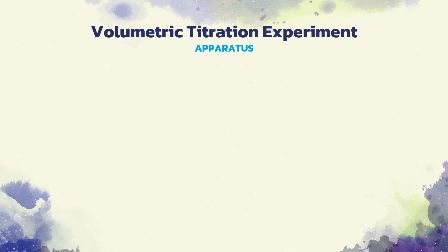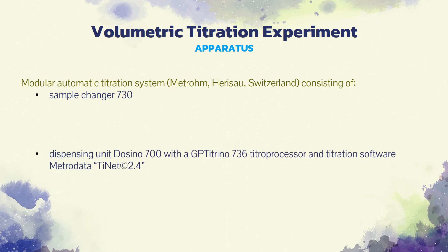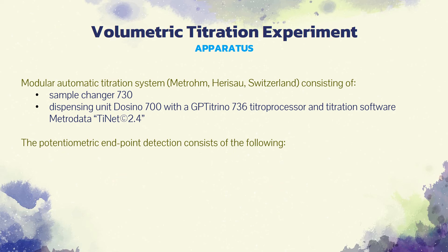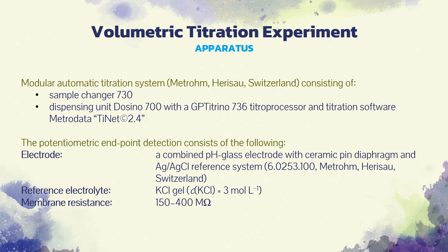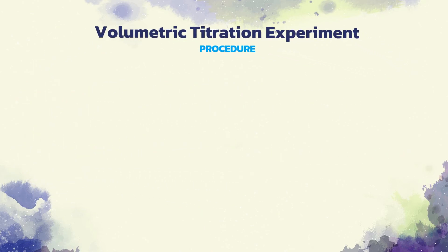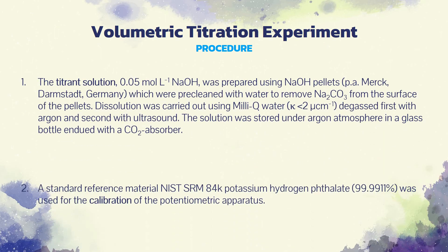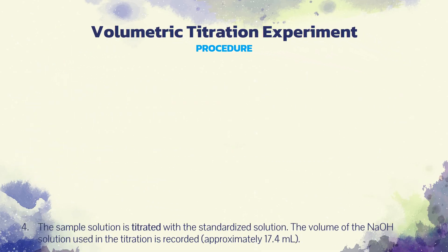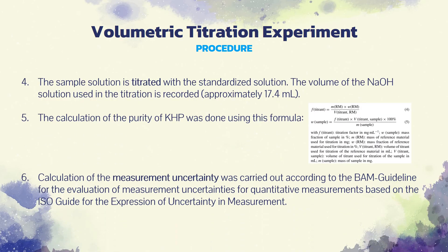For the volumetric titration experiment, titrations were carried out using a modular automatic titration system consisting of a sample changer and a dispensing unit. For potentiometric endpoint detection, a combined pH glass electrode and silver-silver chloride reference system was used. The experimental procedure involves the preparation of the titrant, calibration of the apparatus, drying of the sample, titration of the sample, and calculation of purity and measurement uncertainty.